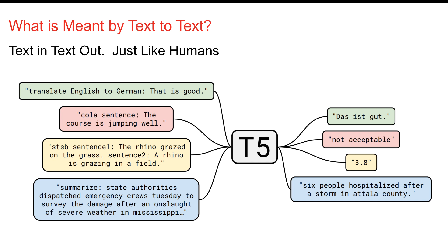Look at what T5 can do. 'Translate English to German colon: this is good.' This is one model — not an ensemble of models. Not something where you take all your translation tasks, grammar checking tasks, similarity tasks, and summarizing tasks and run them through different things. This is literally one input sequence of letters to one output sequence of letters. One column in, one column out. That's pretty amazing.